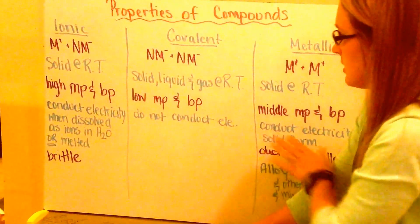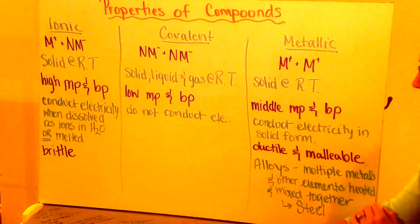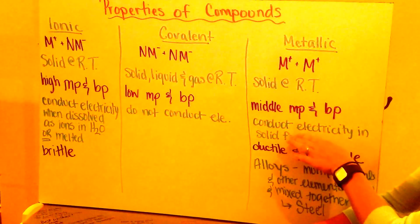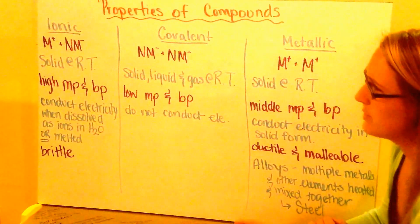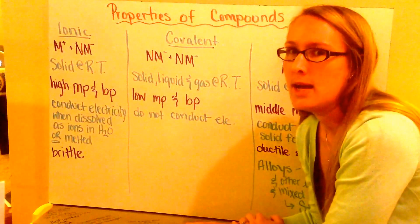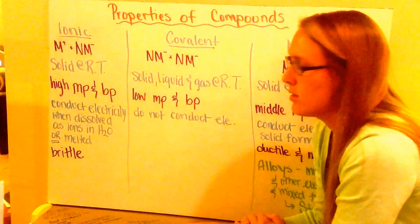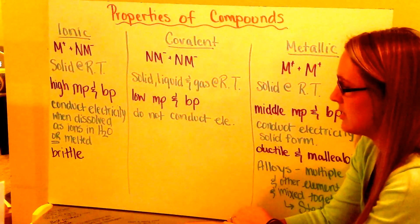Some of them do conduct electricity. Ionic compounds and metallic compounds both conduct electricity. Metallic compounds do so in their solid form. Think of the copper wires that run through your house. Ionic compounds will conduct electricity, but only when dissolved as ions in water or when they're in their molten state. Covalent compounds do not conduct electricity.